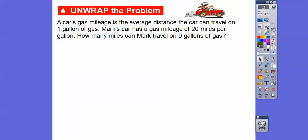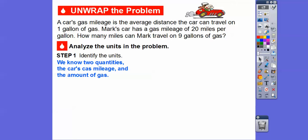A car's gas mileage is the average distance the car can travel on one gallon of gas. Mark's car has a gas mileage of 20 miles per gallon. So how many miles can Mark travel on nine gallons of gas? We know two quantities: the car's gas mileage is 20 miles per gallon, and he has nine gallons of gas.